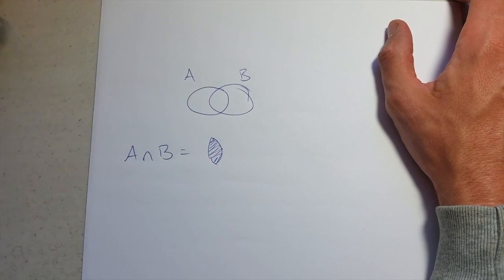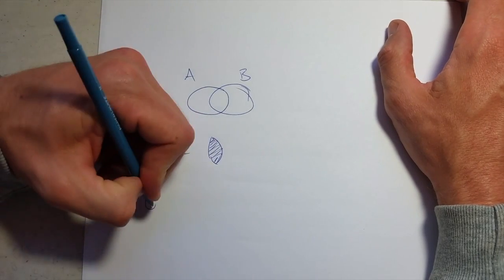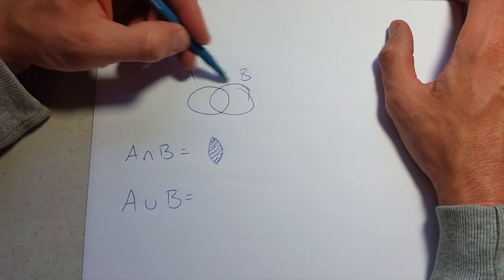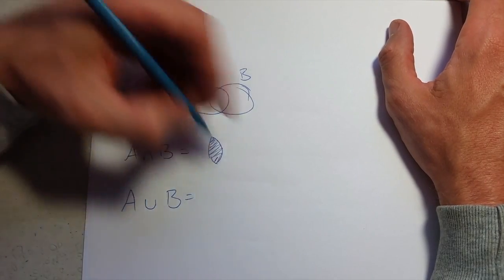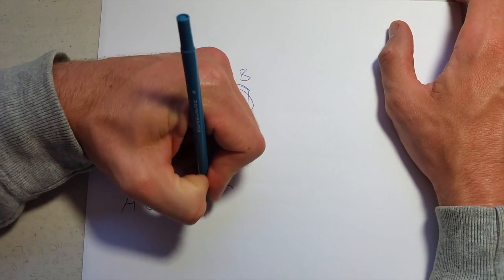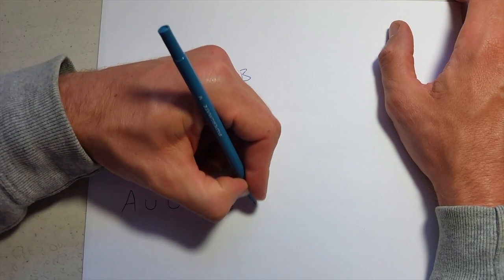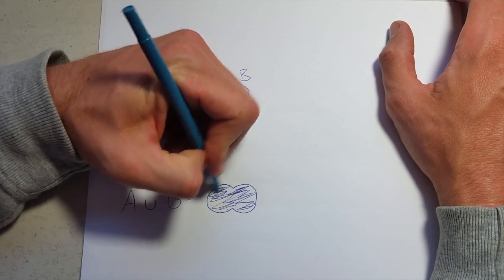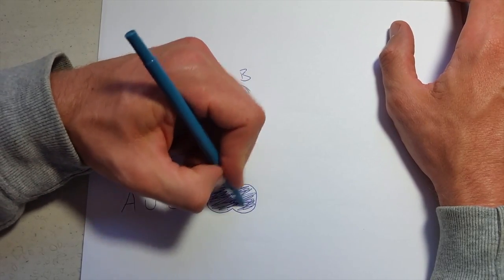It's what they have in common. A union B is everything in A and everything in B. So this is what the union looks like—everything in A or B.